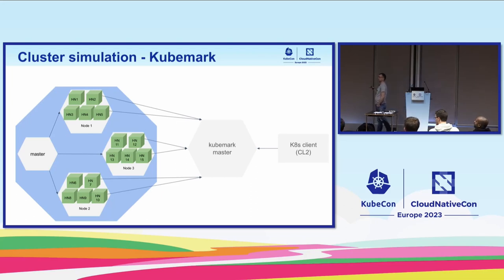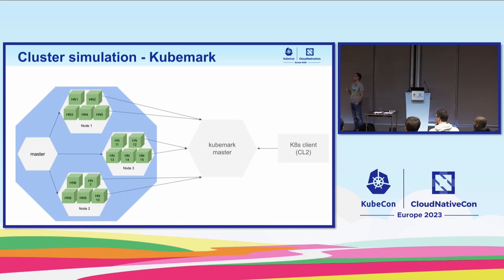Why semi-declaratively? In addition to defining the actual desired state — for example, I want 10,000 pods across 500 deployments and another thousand StatefulSets — you can also define a little bit how their creation or updates should be spread over time, such as saying those deployments should be created evenly across five minutes. It was designed for easy extensibility so that adding new SLOs or new helper functionality should be relatively simple. It already provides a bunch of extra observability features.